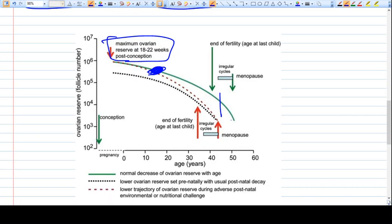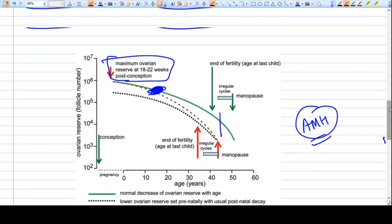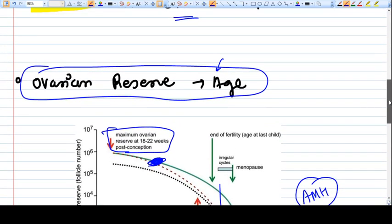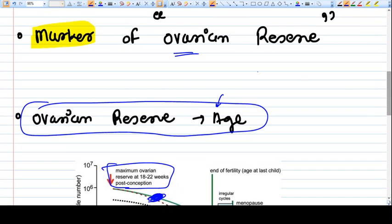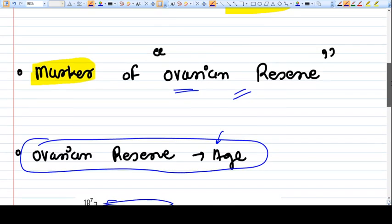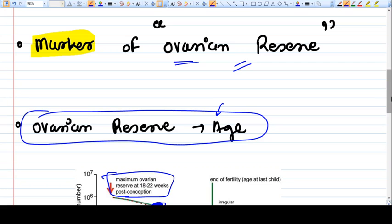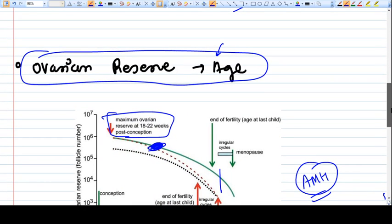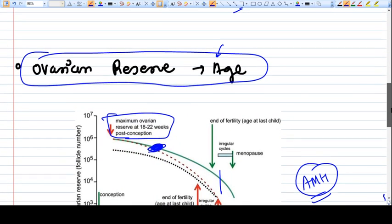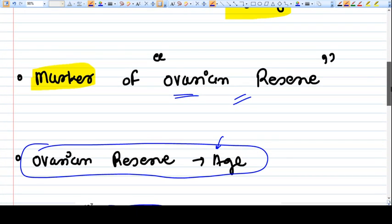Once the ovarian reserve becomes less, no more ova are getting dominant and functionally the female becomes amenorrheic. If we relate this pattern of ovarian reserve with the AMH levels of the female, then it coincides with the ovarian reserve. So AMH becomes a marker of ovarian reserve because it has a pattern similar to ovarian reserve in females.